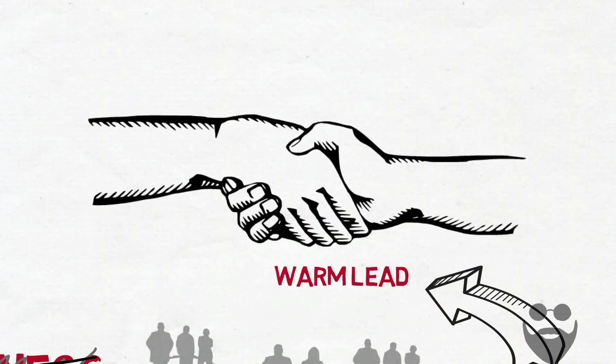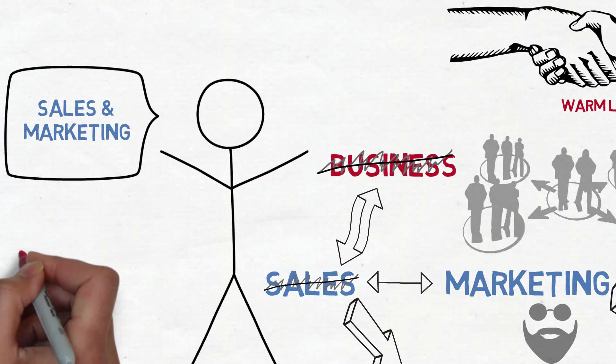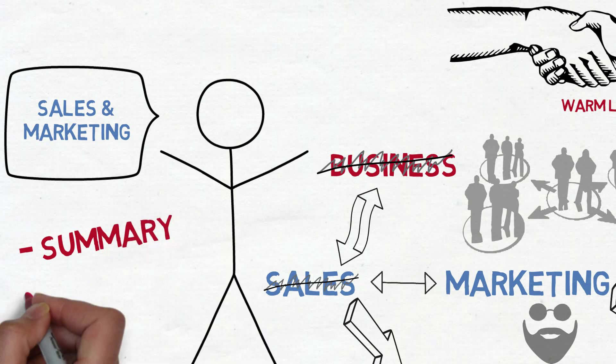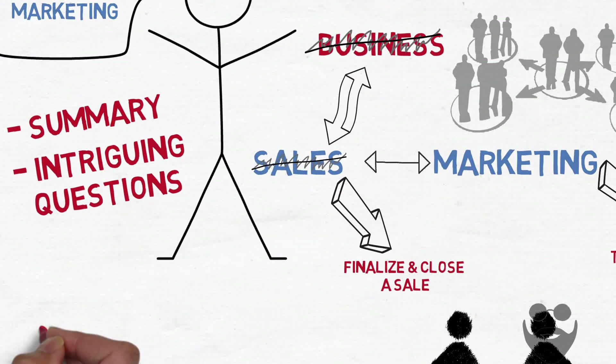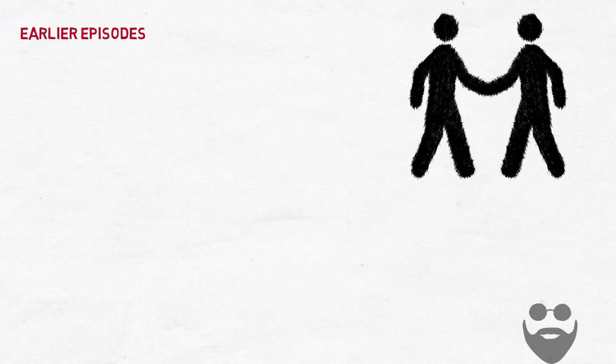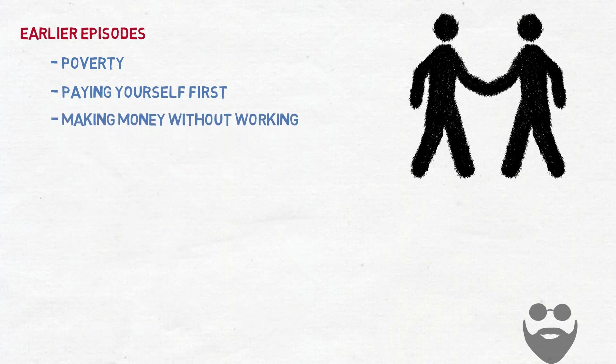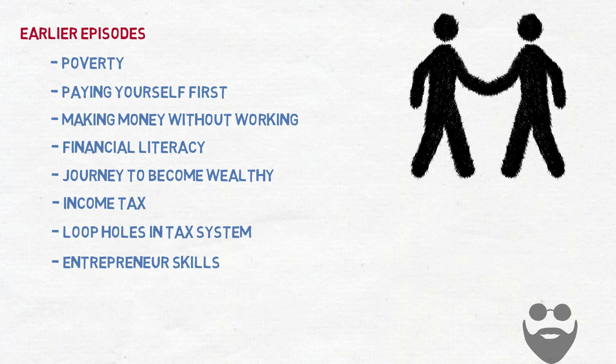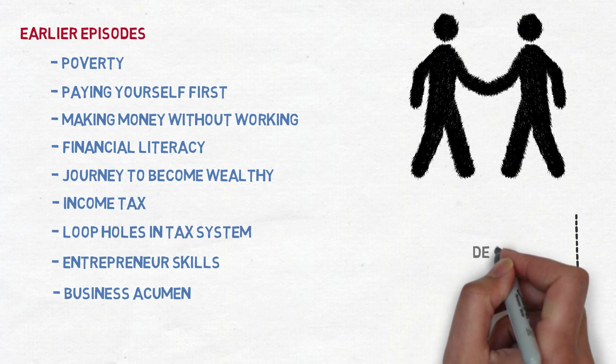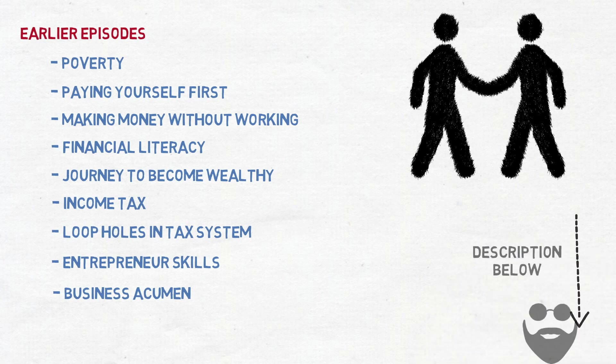Mr. Smart recommends you watch this episode till the end, as there's going to be a summary and intriguing questions. In earlier episodes, we've discussed poverty, paying yourself first, making money without working, financial literacy, the journey to becoming wealthy, income tax and loopholes, as well as entrepreneur skills and business acumen. Links to these videos are available in the description.